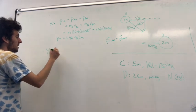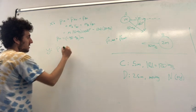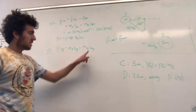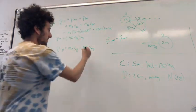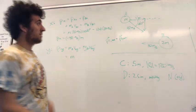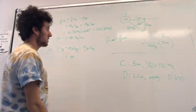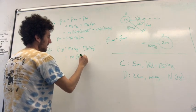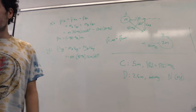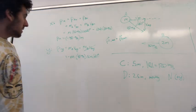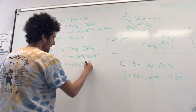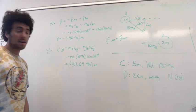Now in the y direction, same type of thing, we have P initial y is just MA VAY plus MB VBY. There is no VBY, right? B is only moving in the x direction, so this term is zero, so we're only left with the y component of A. Again, the mass of A is just M, and the y component of its velocity is here, which is opposite the angle we're given. So we're going to use sine, so this is going to be 40 meters per second times sine of 60 degrees, and that's negative because it's pointed in the negative y direction. So now we can just evaluate that, and that comes out to negative 34.64 meters per second, also times this M.